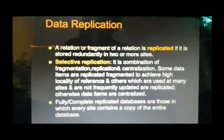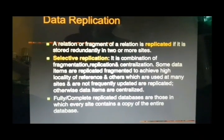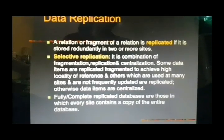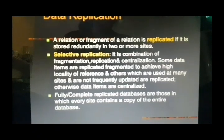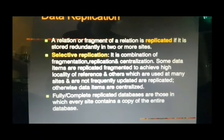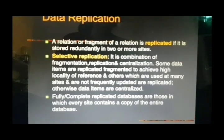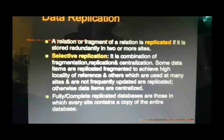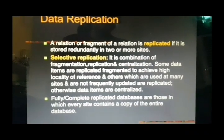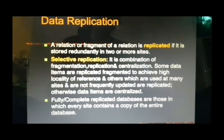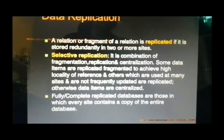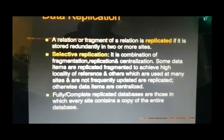Selective replication is a combination of fragmentation, replication, and centralization. Some data items are fragmented to achieve high locality of reference. High locality of reference means the data we want to refer should be local at the site. If the data is needed at site 2 but stored at site 1, we have to access it from site 1. But if a replicated copy is stored at site 2, then it can be accessed locally. This is known as locality of reference. With the help of replication, locality of reference is increased.